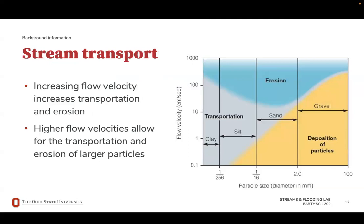When studying and understanding streams, it's important to remember that faster water can carry more and larger particles. The volume of water passing through a river channel influences its capacity to transport sediment. The amount of sediment available for transport depends on erosion rates in the watershed and the stream's ability to entrain or pick up sediment. The geometry of a stream channel affects flow patterns and sediment transport dynamics, and plants can stabilize soils and reduce the availability of sediments for transport.